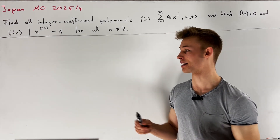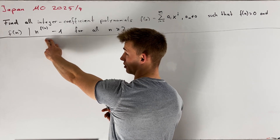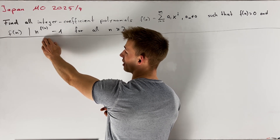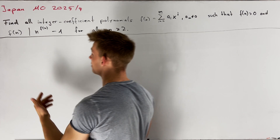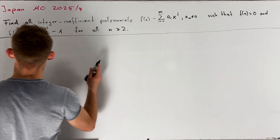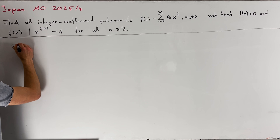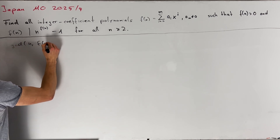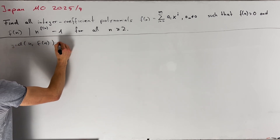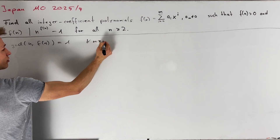First, let's take a look at the right-hand side of our divisibility condition. We see that the right-hand side is coprime to n. This directly implies that the left-hand side must also be coprime to n, and so we can conclude that gcd(n, f(n)) equals 1 for all n greater than or equal to 2.